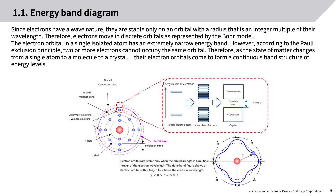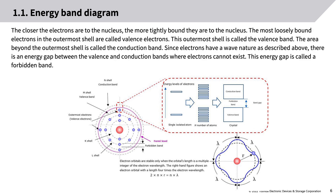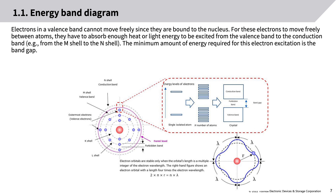The electron orbital in a single isolated atom has an extremely narrow energy band. However, according to the Pauli exclusion principle, two or more electrons cannot occupy the same orbital. Therefore, as the state of matter changes from a single atom to a molecule to a crystal, their electron orbitals form a continuous band structure of energy levels. The most loosely bound electrons in the outermost shell are called valence electrons; this shell is called the valence band. The area beyond the outermost shell is called the conduction band. There is an energy gap between the valence and conduction bands where electrons cannot exist, called the forbidden band. Electrons in the valence band cannot move freely, as they must absorb enough heat or light energy to be excited into the conduction band. The minimum energy required for this excitation is the band gap.